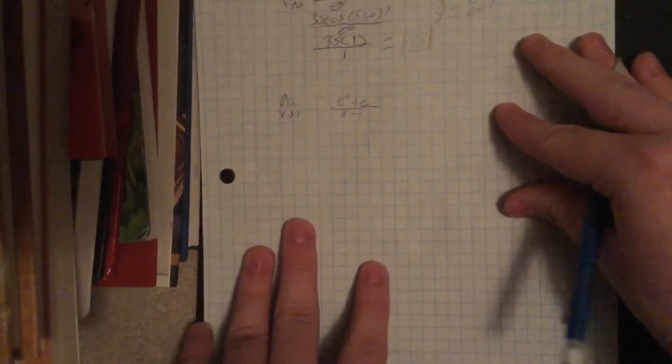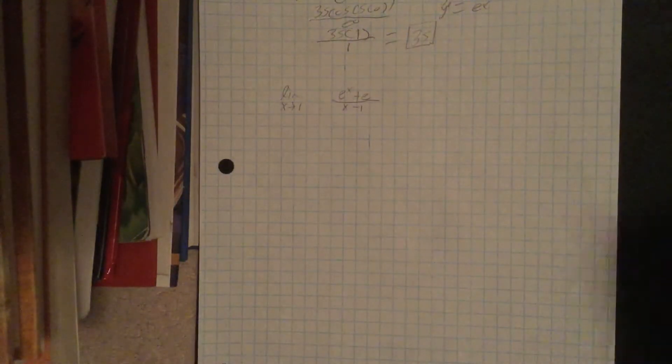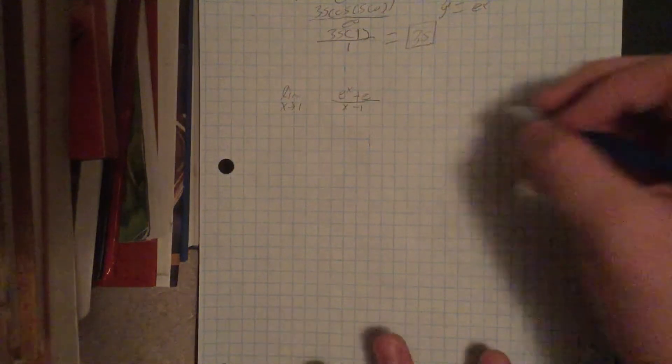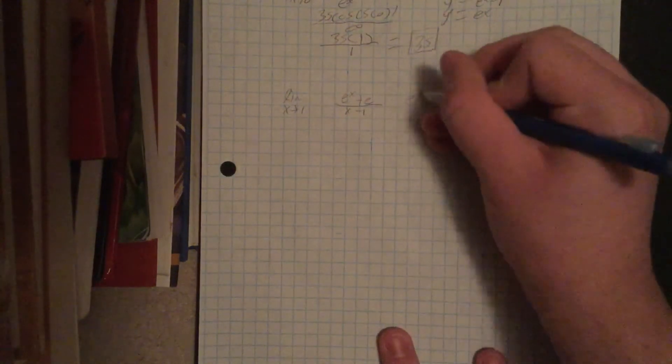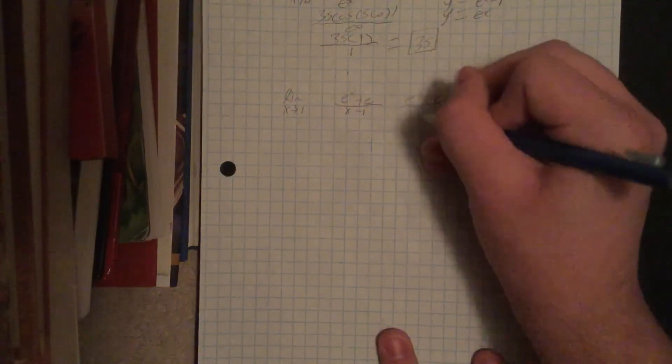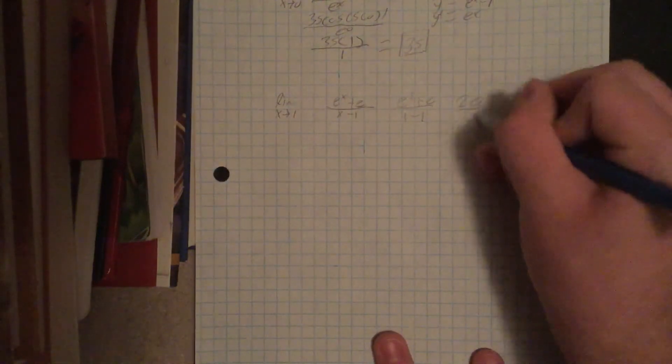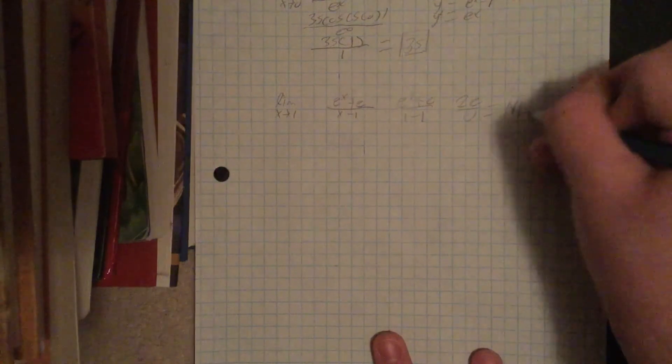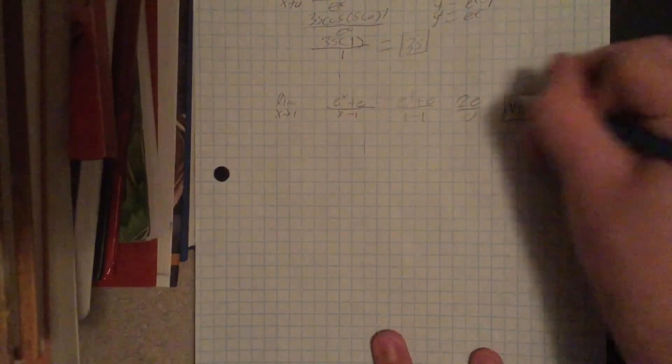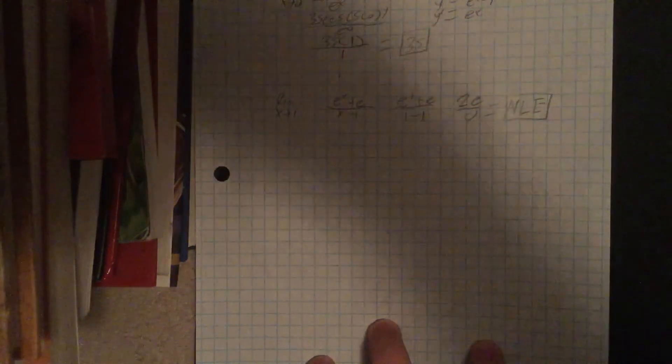For our second problem, we have the limit as x approaches 1 of e to the x plus e over x minus 1. So we'll plug in our variable, get e to the 1 plus e over 1 minus 1, which will get us 2e over 0, getting us no limit exists, because Lope-Tol's rule only works if you get 0 over 0.